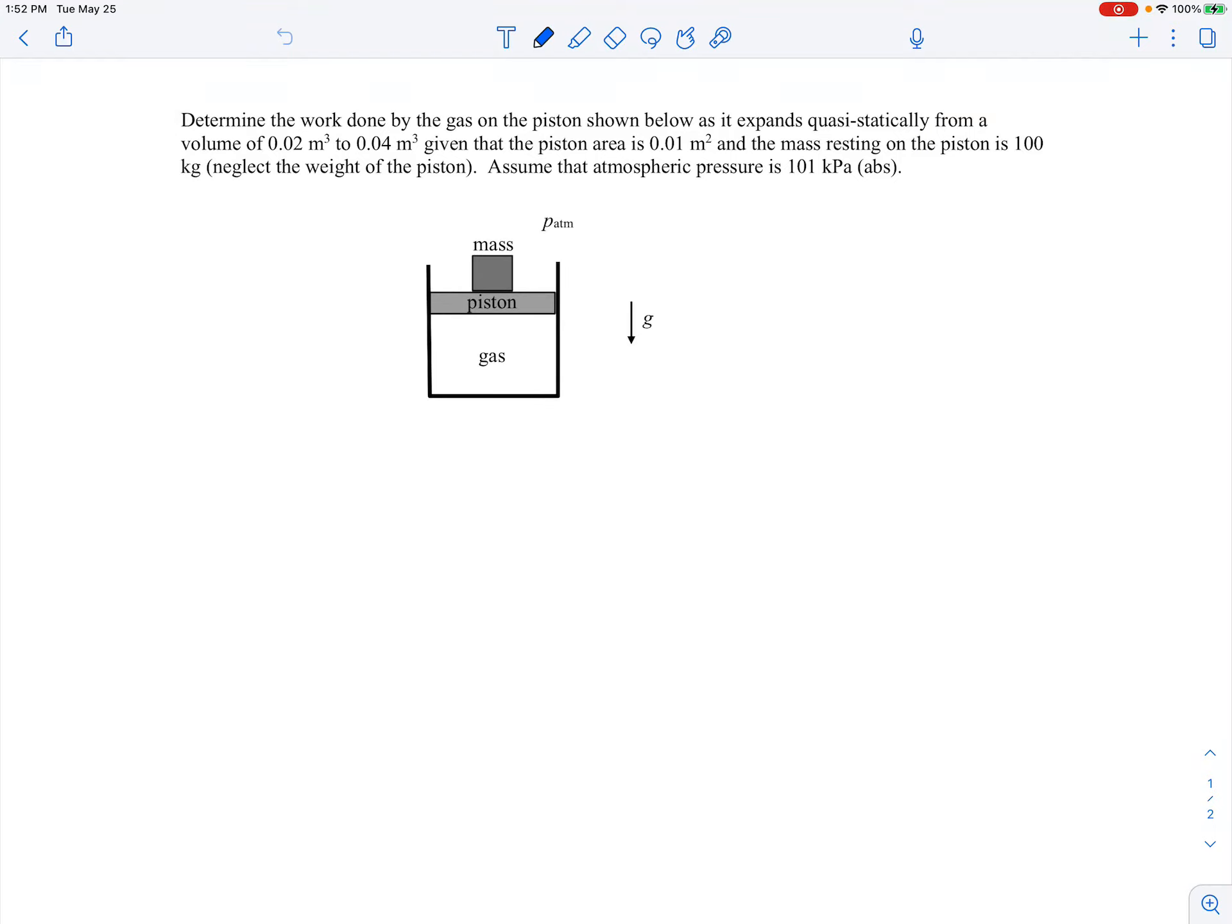Here we're asked to determine the work done by the gas on a piston shown in a figure as it expands quasi-statically from some initial volume to some final volume, given that the piston area is 0.01 square meters. So that's the cross-sectional area of this piston.